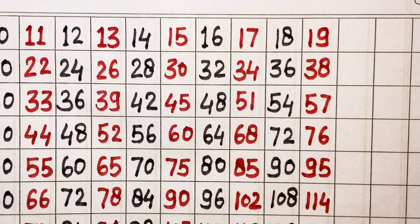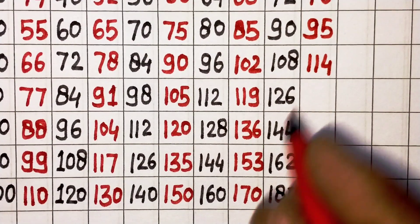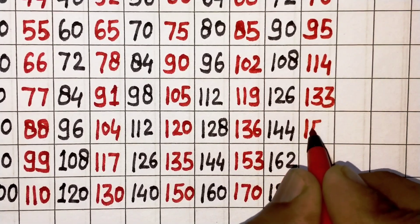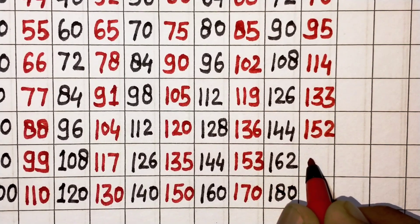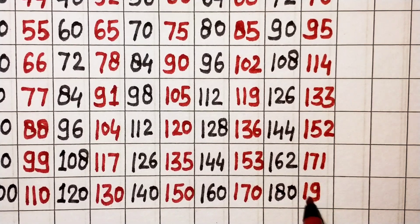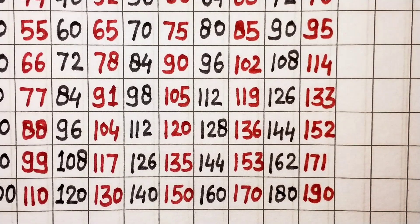19 eights are 152, 19 nines are 171, 19 tens are 190. Next, 20.